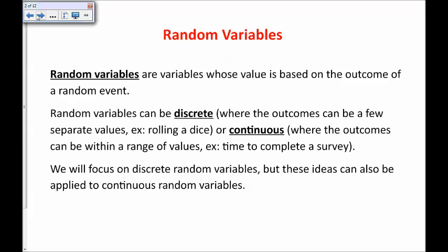Random variables can also be continuous, where the outcomes can be within a range of values. For example, the amount of time it takes to complete a survey or someone's height could be thought of as a continuous variable because it could be any value within a range of values. For most of this chapter we will focus on discrete random variables, but these ideas also can be applied to continuous random variables.